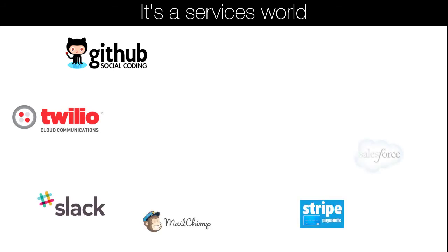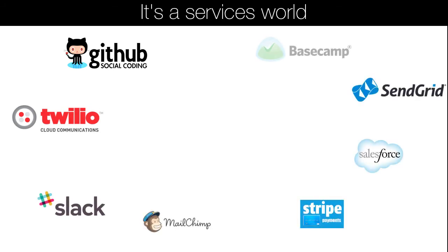We might want to talk to GitHub to work with source code, repositories, and automated builds. Maybe we want to use Twilio for adding telephony and text services to our app. Of course, we want to update people through their Slack channel, send and subscribe people to our mailing list via MailChimp, or charge them money over their credit cards using the Stripe APIs.